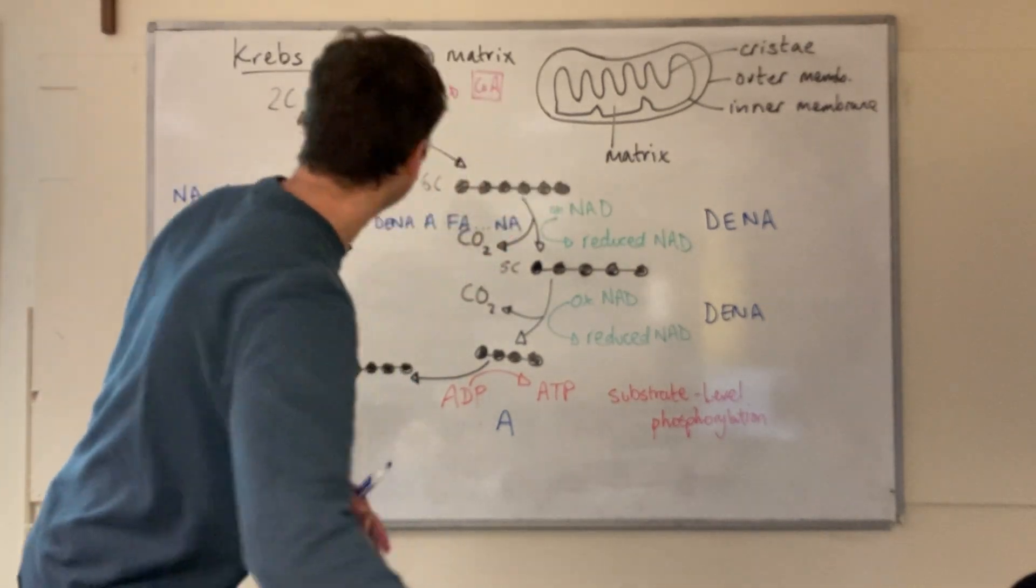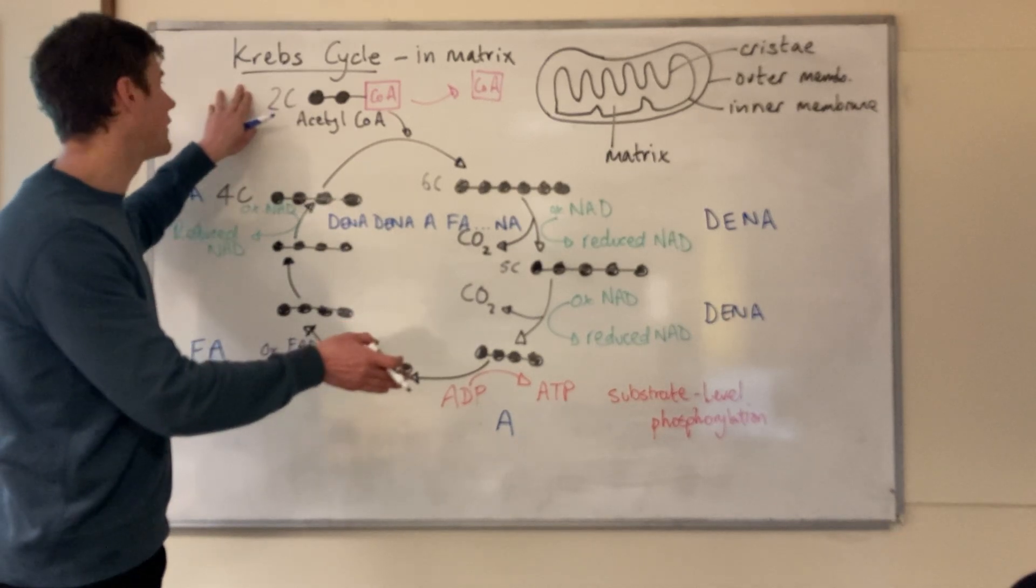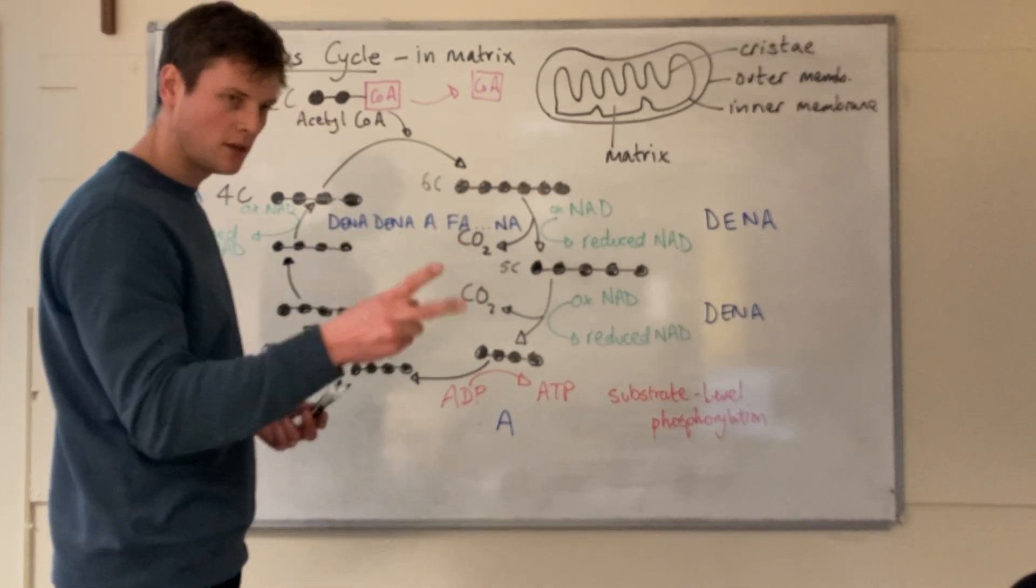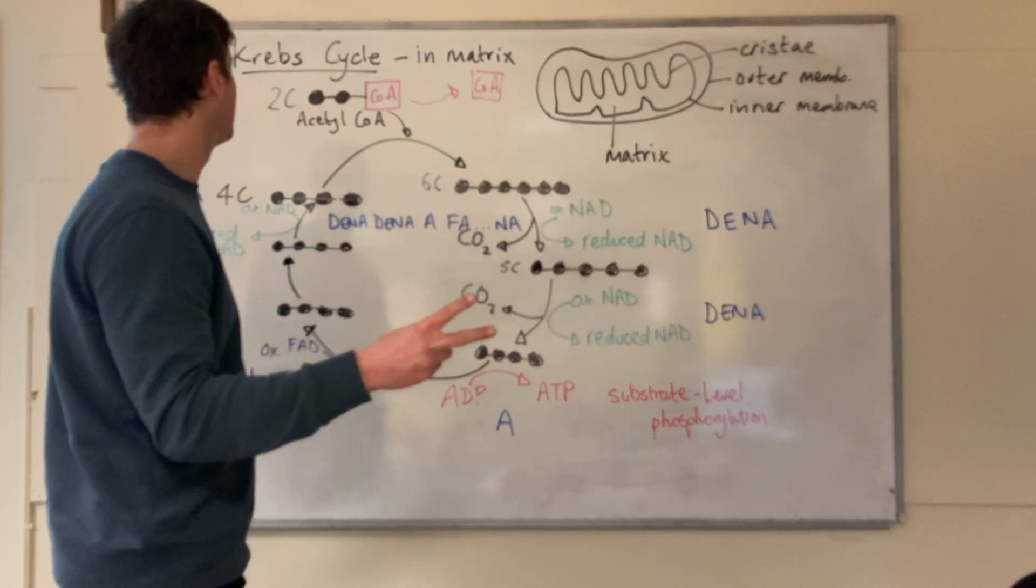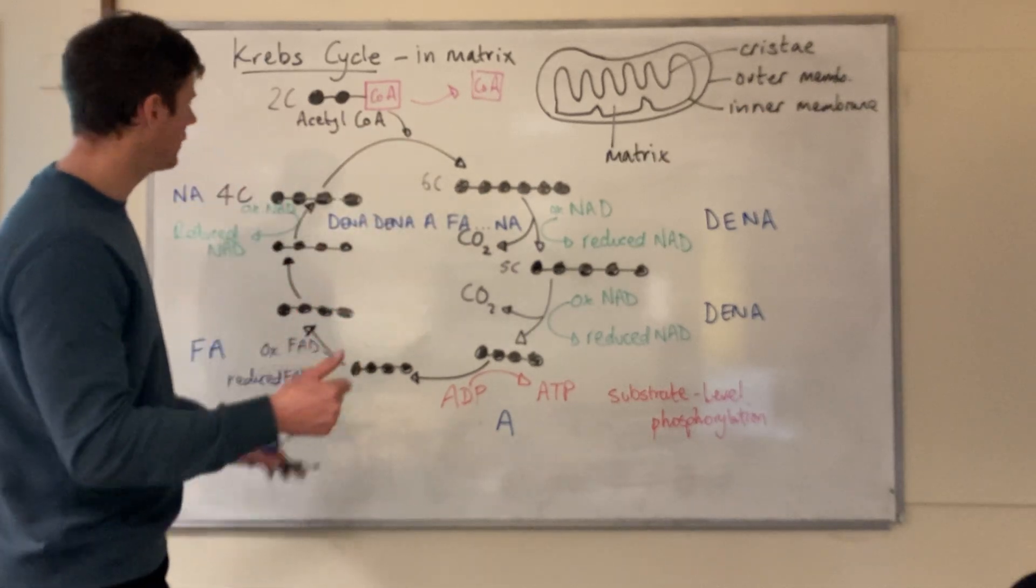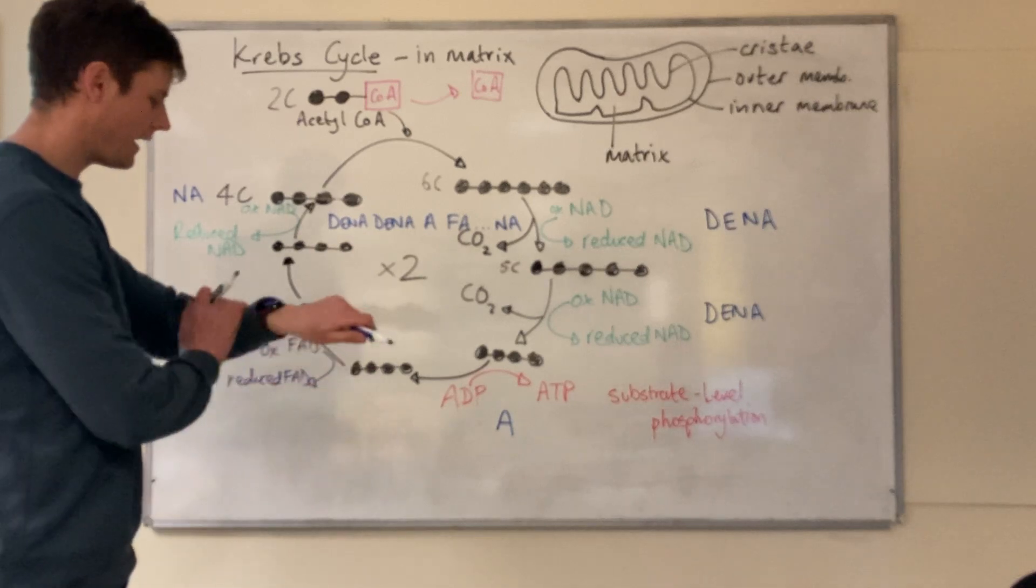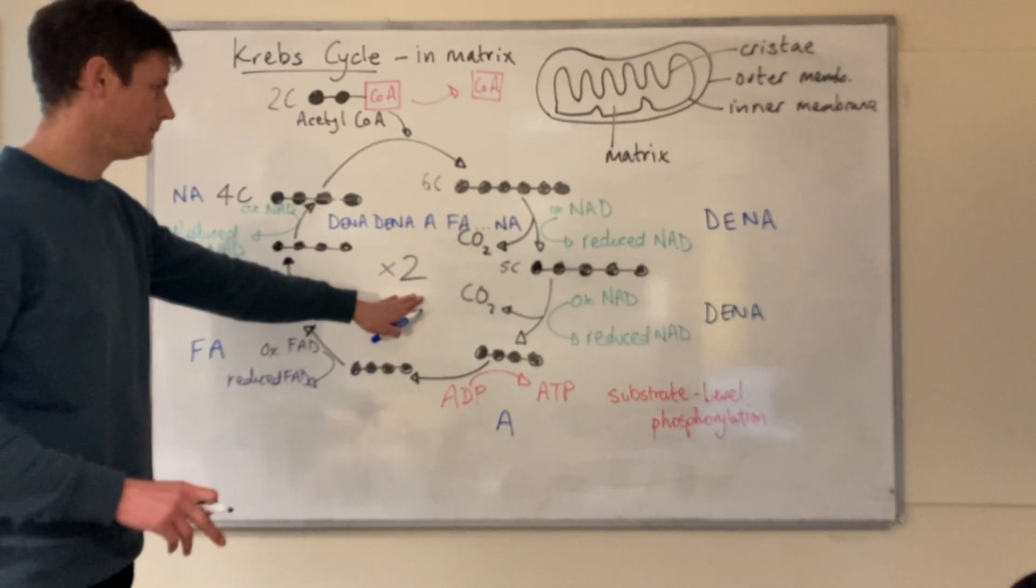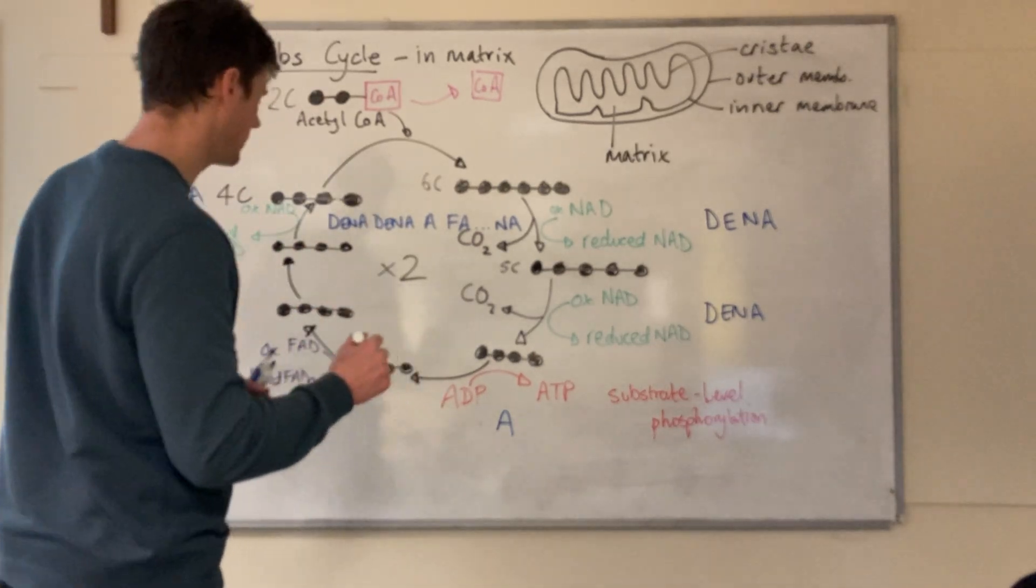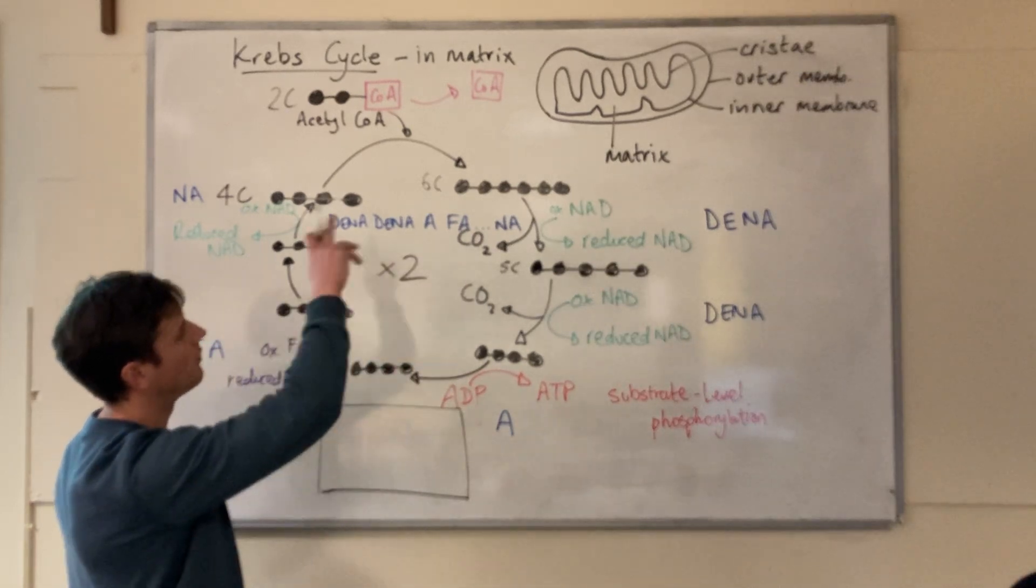Another thing to remember. The Krebs cycle is continuing on from the link reaction, which has continued from glycolysis. We know we started glycolysis with one glucose molecule. That became two triose phosphates, two pyruvates. Those pyruvates became two acetyl-CoAs in the link reaction. Starting from one glucose, we have two acetyl-CoAs. Which means, with each glucose that you begin with, we have two Krebs cycles. When we think about the products from the Krebs cycle, we have to double up everything that we've produced here.